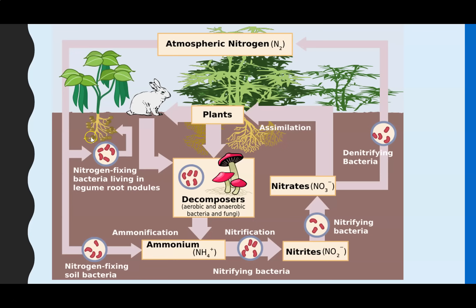Leguminous plants are able to absorb nitrogen gas from the air in the soil and convert it directly into a nitrogen-containing compound, because of the bacteria in the root nodules. That is a symbiotic relationship where both the bacteria and the plant are gaining benefit from coexisting together. If it's not a leguminous plant, there is nitrogen-fixing bacteria that naturally occurs in the soil, and those bacteria are able to react with the nitrogen and convert it into ammonium.